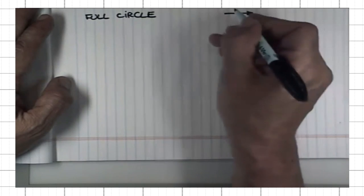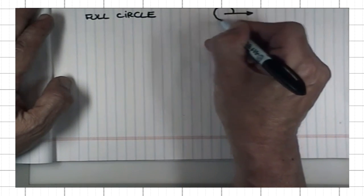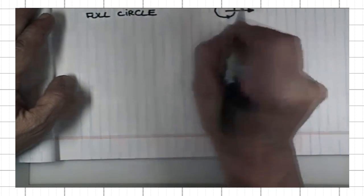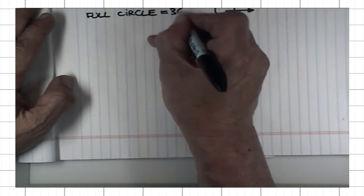If I have an arrow and I rotate it so that it completes the full circle, it's 360 degrees.